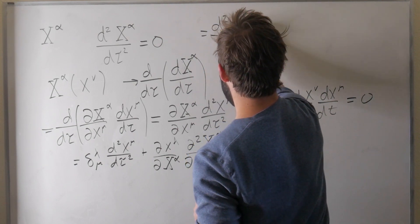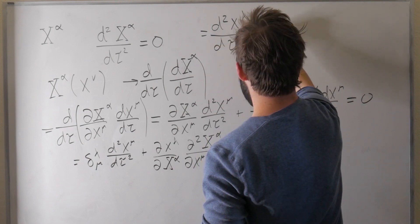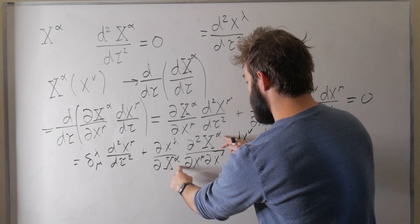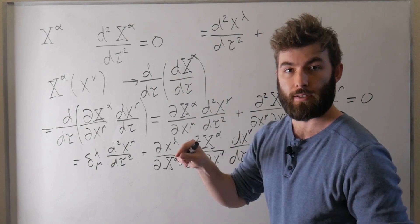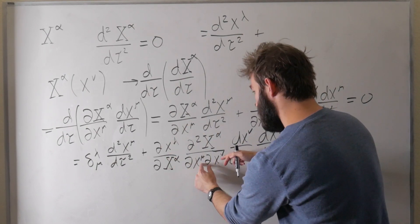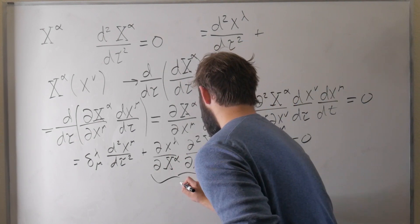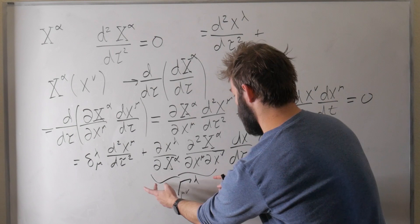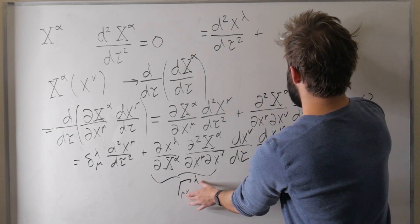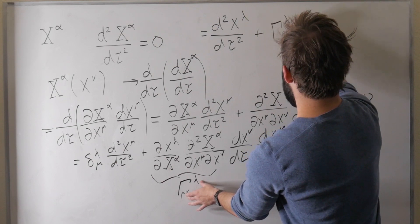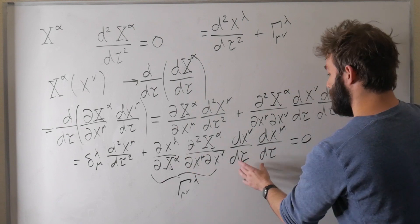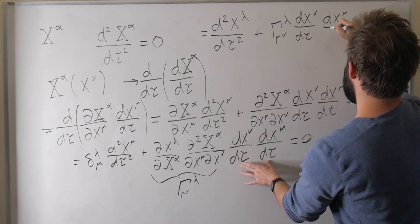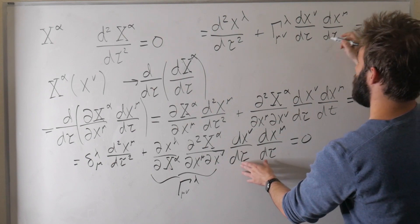So this simplifies to d²x lambda over d tau squared plus Γ lambda mu nu times (dx nu over d tau)(dx mu over d tau) equals zero. I've given that second derivative coefficient a new name — Gamma Γ lambda mu nu — because we're summing over alpha, so it doesn't carry an alpha index, but it does carry the free indices lambda, mu, and nu.